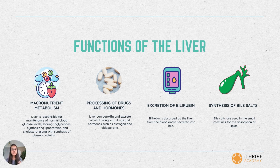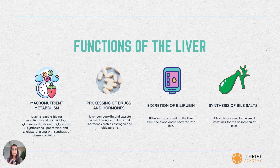The next function is excretion of bilirubin. Bilirubin is the breakdown product of aged RBCs. RBCs renew every three months and the breakdown product of these RBCs is bilirubin. Since it is a breakdown product, it needs to be excreted out of the body. It is absorbed by the liver from the blood and is excreted outside the body in the form of bile.